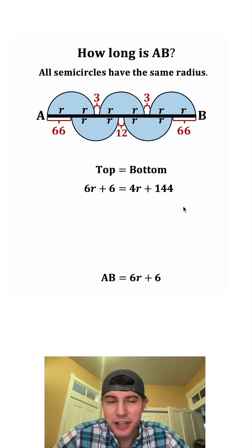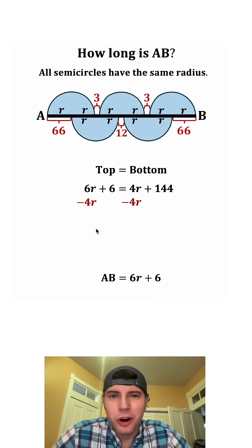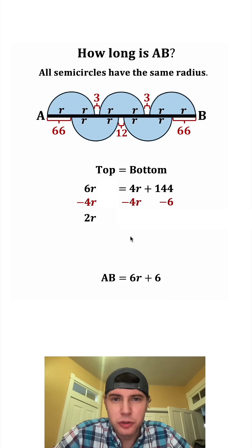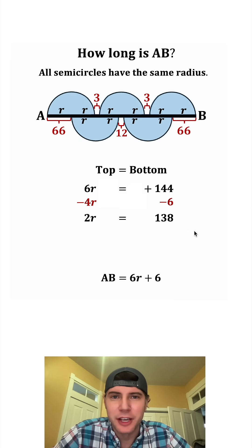We can subtract 4R from both sides and subtract 6 from both sides. On the left-hand side, the sixes will cancel each other out and that'll leave us with 2R. On the right-hand side, the R's will cancel each other out, and that leaves us with 144 minus 6, which is 138.